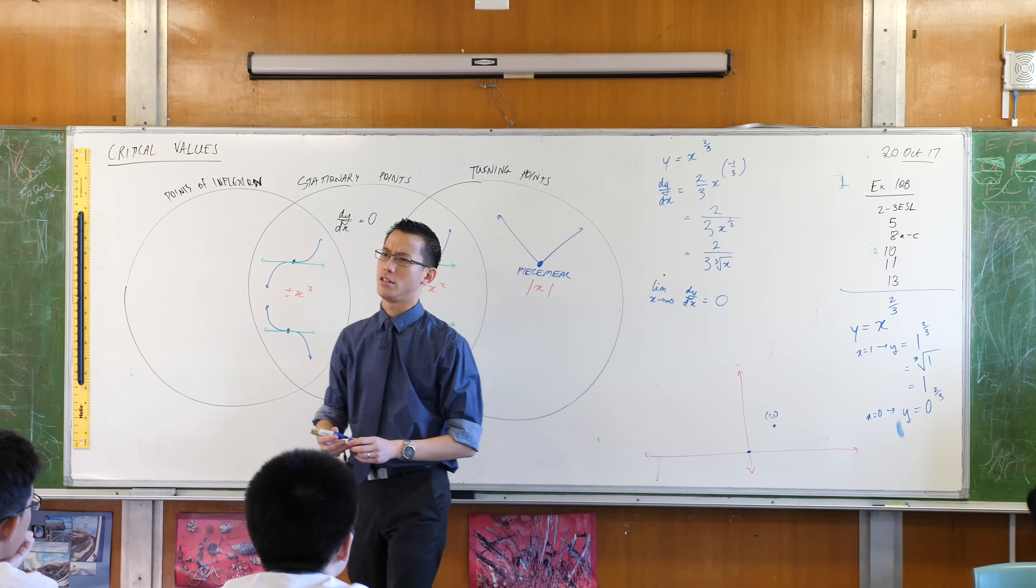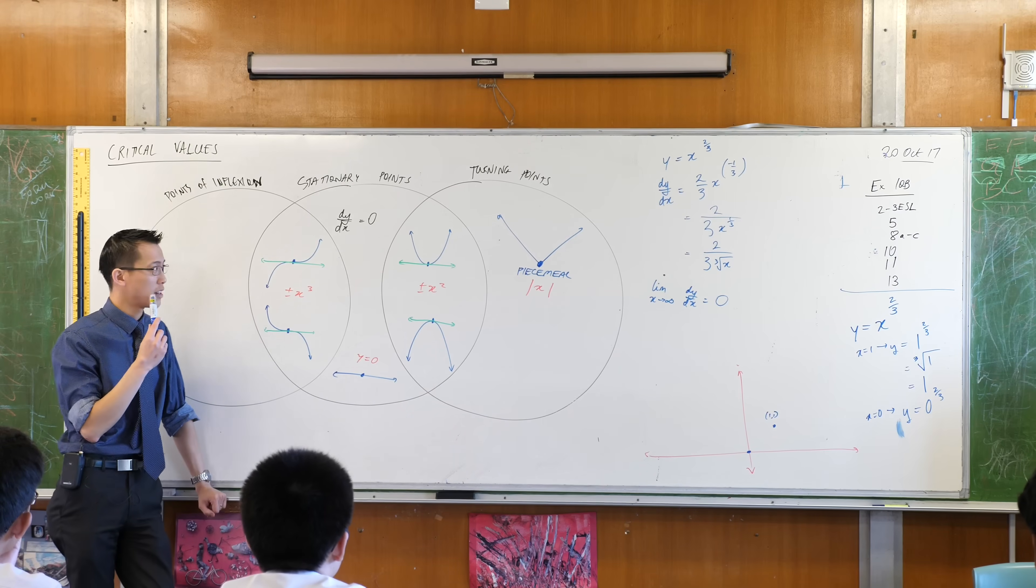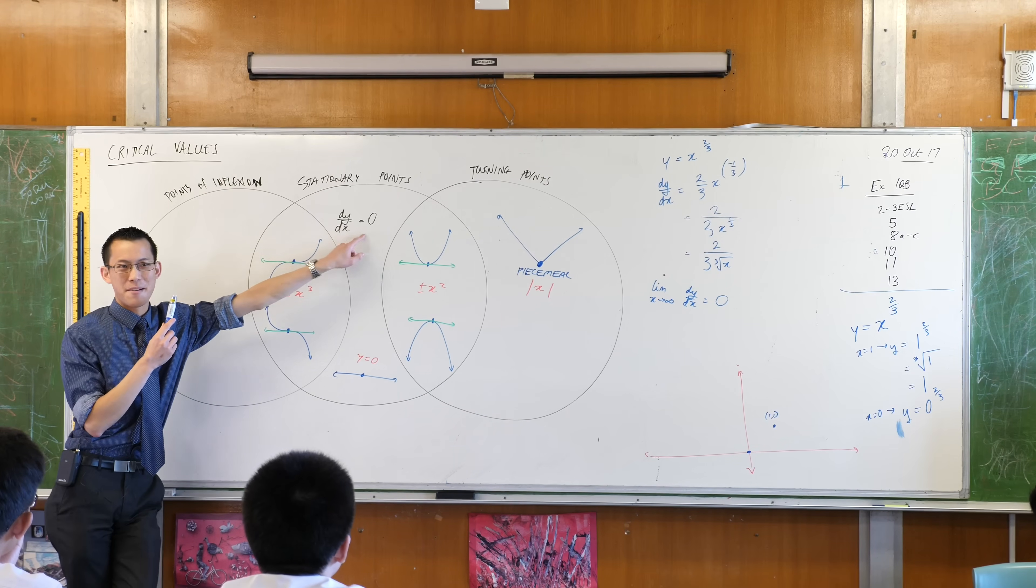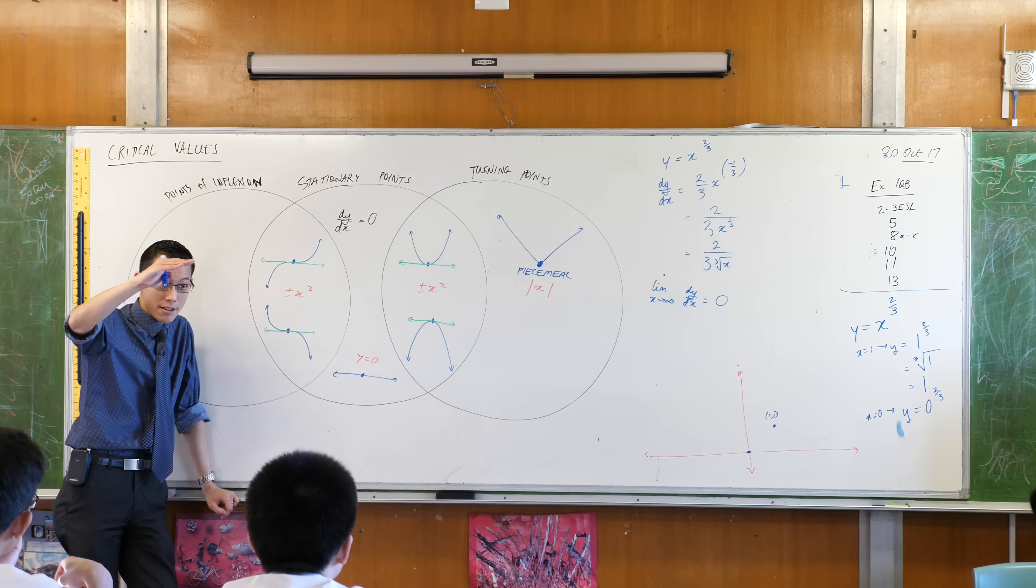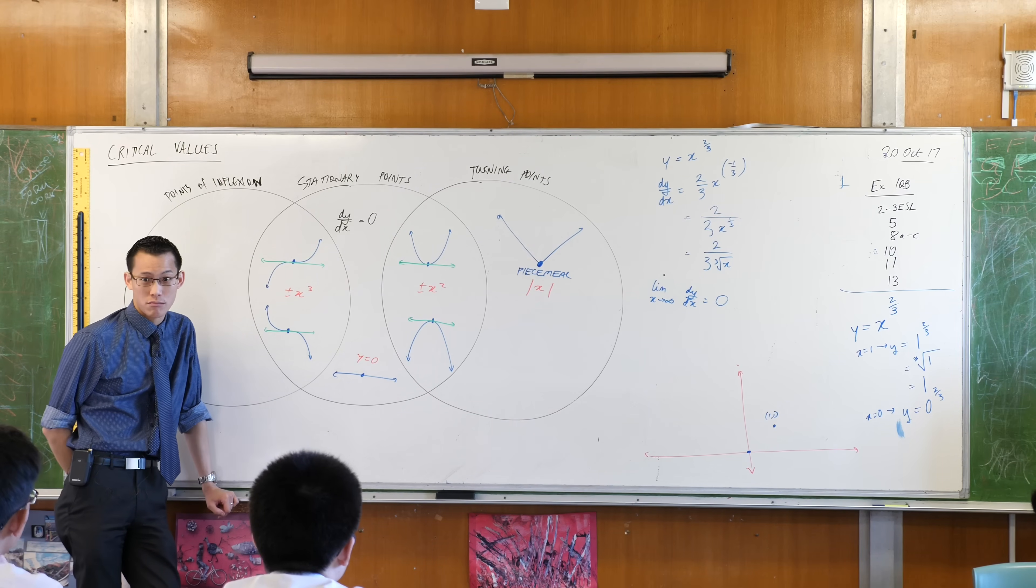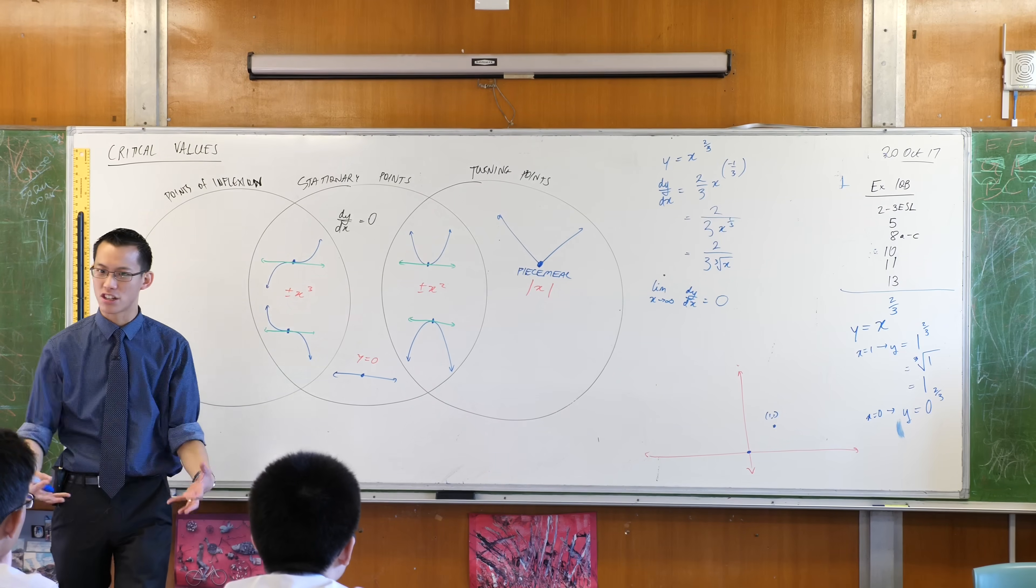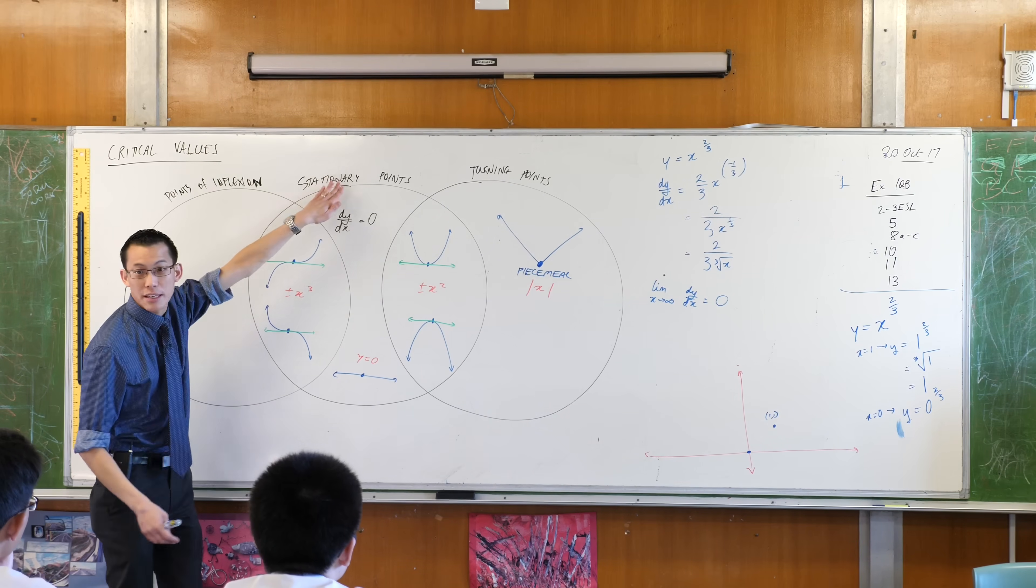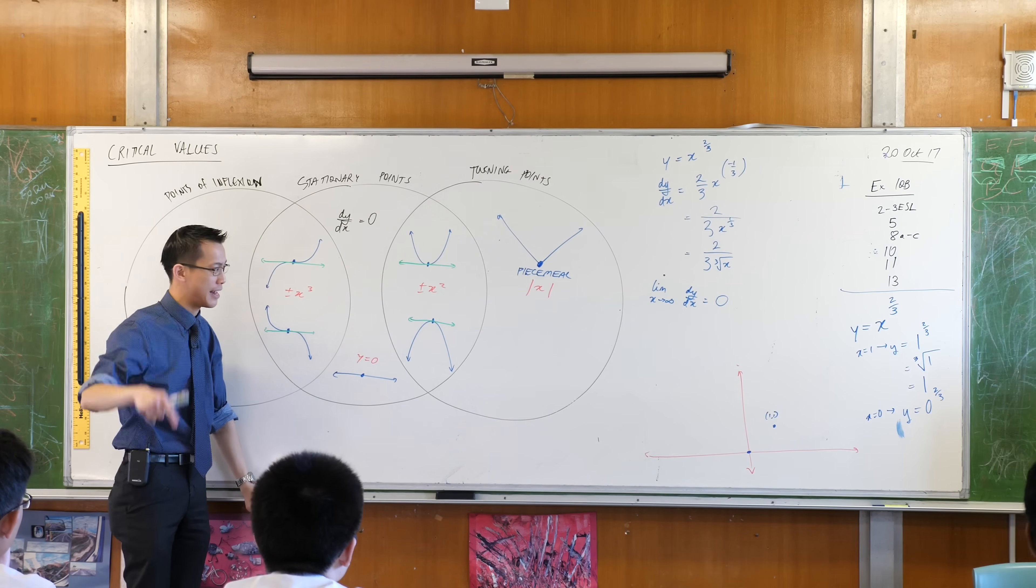When something approaches zero, the derivative that is, what does that mean about the graph? What kind of shape are you getting? It's leveling out, isn't it? It's slowing down. Does it ever actually get to zero? It does not because the denominator, there's no value you can put into the denominator to take the whole thing zero. So you never actually become stationary, but you get pretty close, right? It's going to really flatten out.